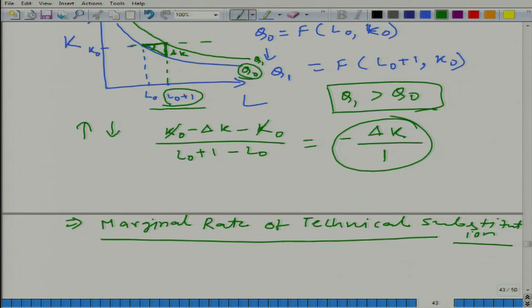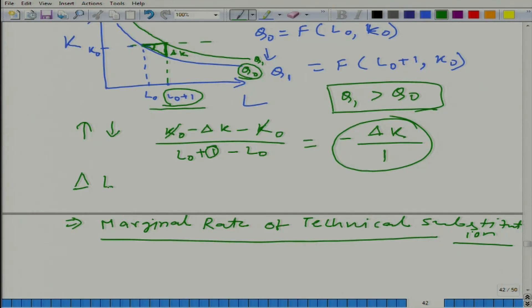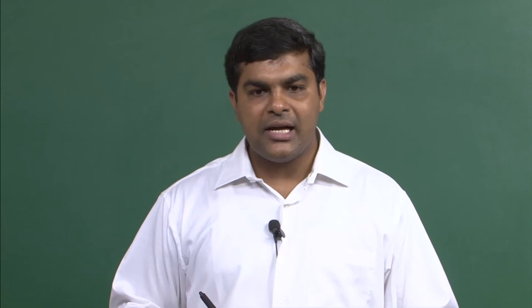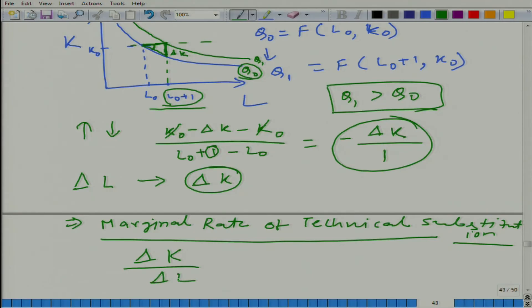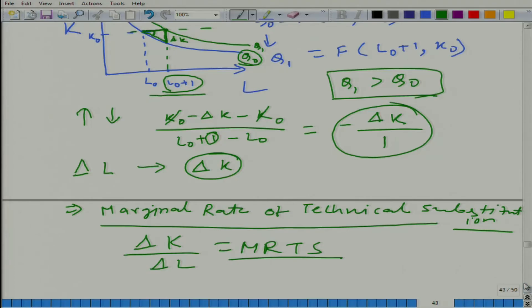In the more general case, instead of taking a change in labor of 1, we can talk about delta L — a general change in labor. If we increase labor by delta L, the capital needs to decrease by delta K to keep output at the same level. In that case, delta K divided by delta L is defined as the marginal rate of technical substitution, or MRTS in short. This is also called the rate of technical substitution, or RTS. You can use either term — they represent the same thing.